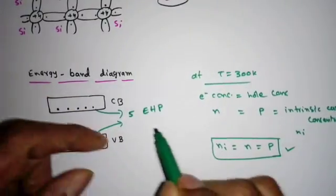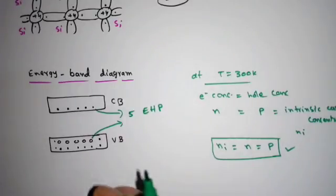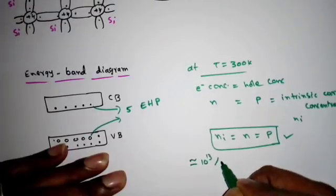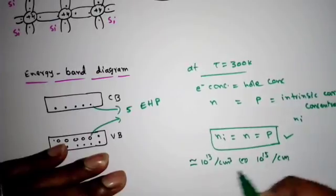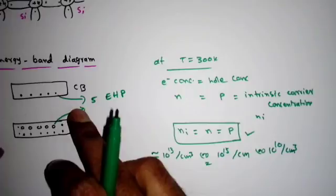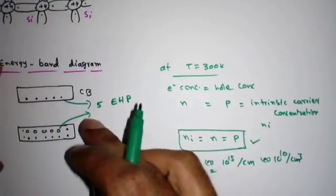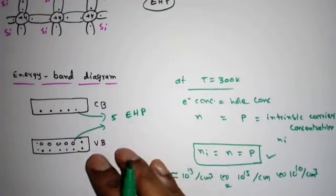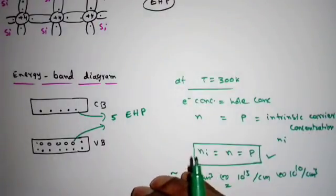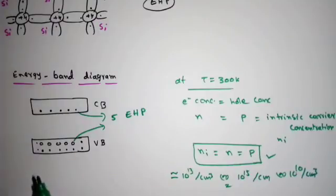At steady state, we maintain an intrinsic carrier concentration of the order of 10¹⁰, 10¹³, or 10¹⁵ per centimeter cube. This number of electrons and holes present in the intrinsic semiconductor is very small compared to an extrinsic semiconductor. Therefore, the conductivity and current in an intrinsic semiconductor is very small — not sufficient to drive electronic devices. That is why we go for extrinsic semiconductors, where we add impurities to increase electron or hole concentration.